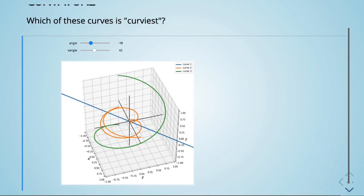The answer: curve 2, curve 3, curve 1 — curviest to least curvy. Curve 1 is a straight line — the least curvy thing possible, curvature 0. Curvature is a scalar measurement, always non-negative: zero means straight line, higher number means curvier.